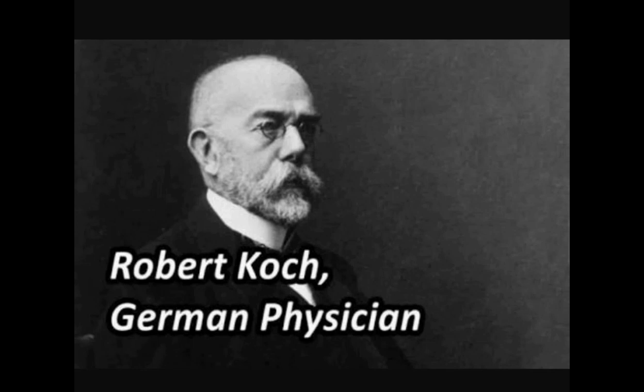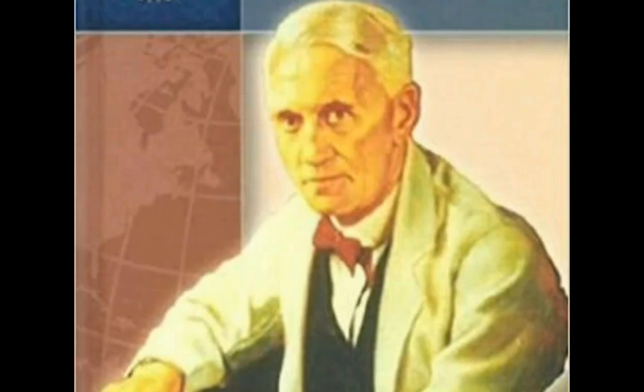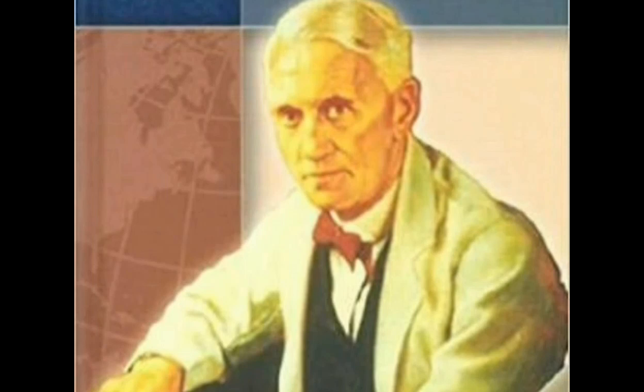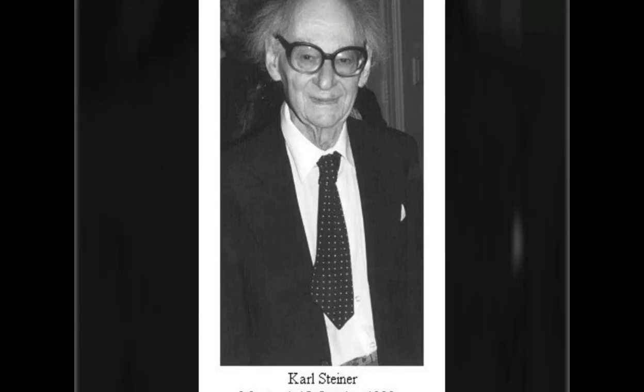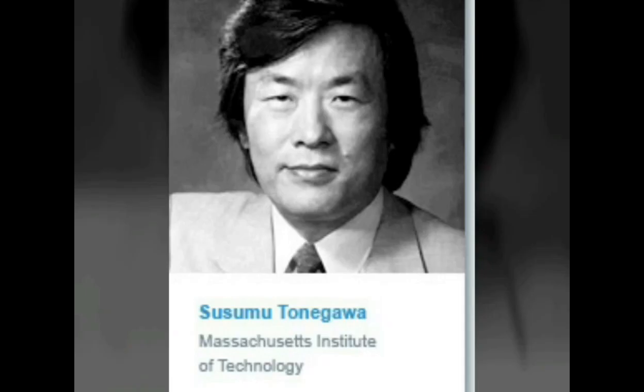In 1910, Robert Koch made contributions to tuberculosis. In 1955, Alexander Fleming discovered penicillin. In 1943, Karl Landsteiner discovered the ABO blood group. In 1985, Johnny Gava Hood discovered immunoglobulin genes.